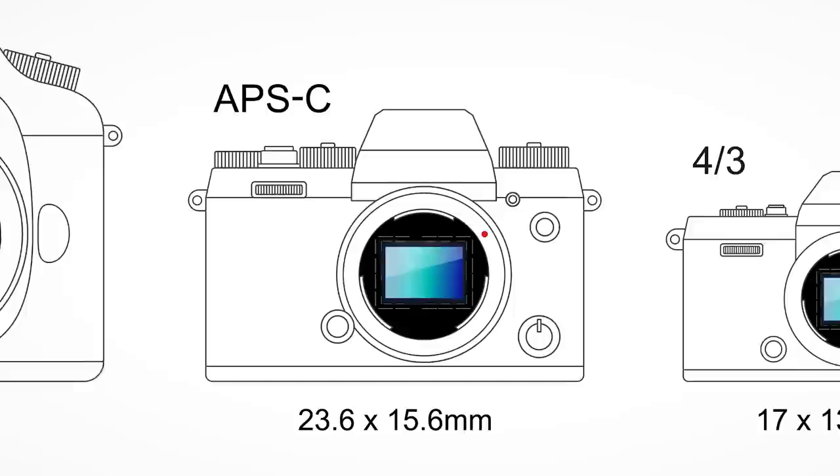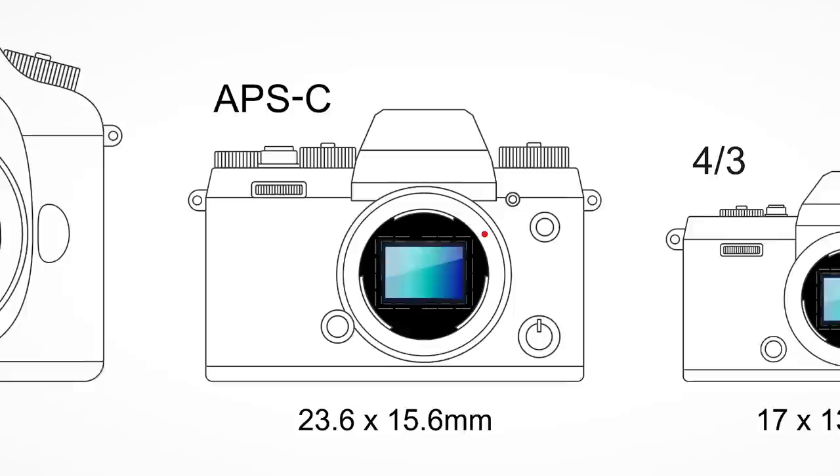These two camera types use different lenses. For Canon, cameras like the 1300D and APC size crop sensor cameras use EFS lenses. The EFS designation indicates it is designed for Canon's crop sensor cameras.